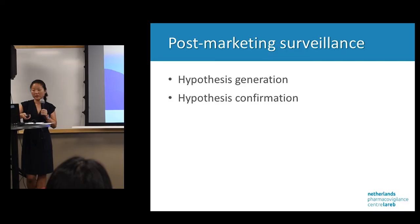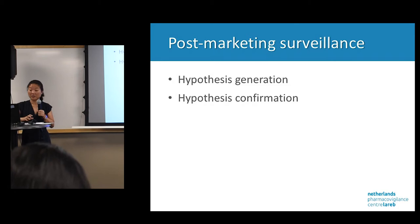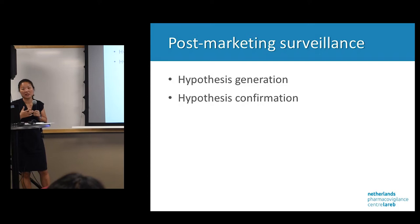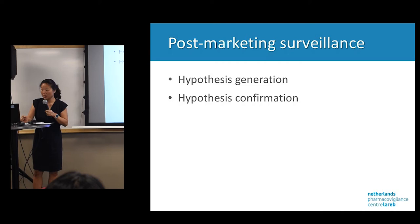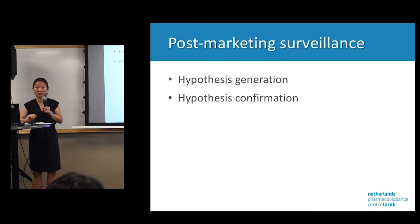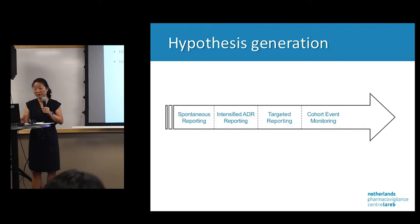In post-marketing surveillance you have two different kinds of methods. Some are based on generating a hypothesis — those methods give you an idea of what can possibly be an ADR. The second kind confirms hypotheses. Pharmacovigilance does a lot of hypothesis generation, saying 'here it can be something wrong,' while pharmacoepidemiology does more of the confirmation, putting a numeric measure on what a risk is.